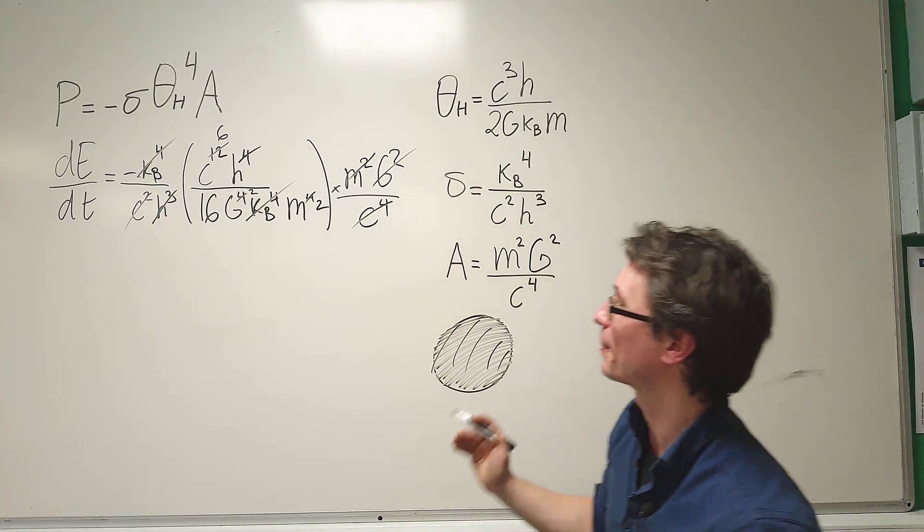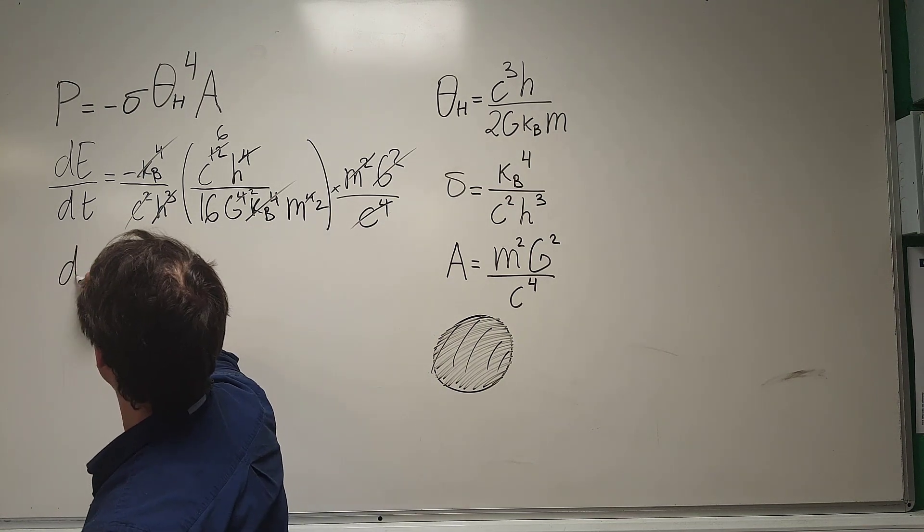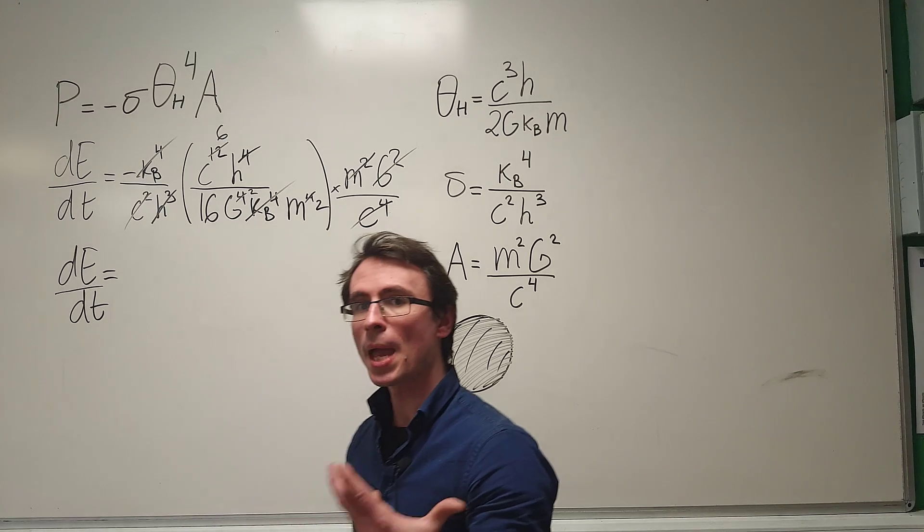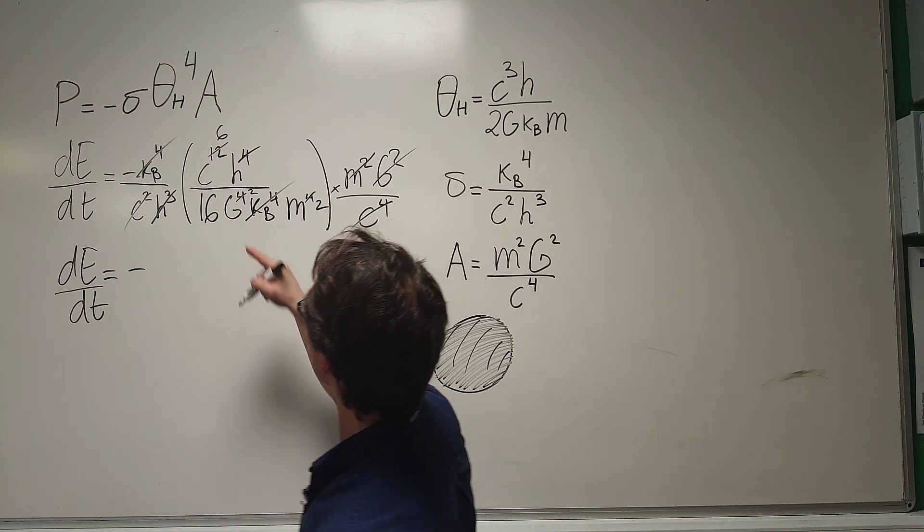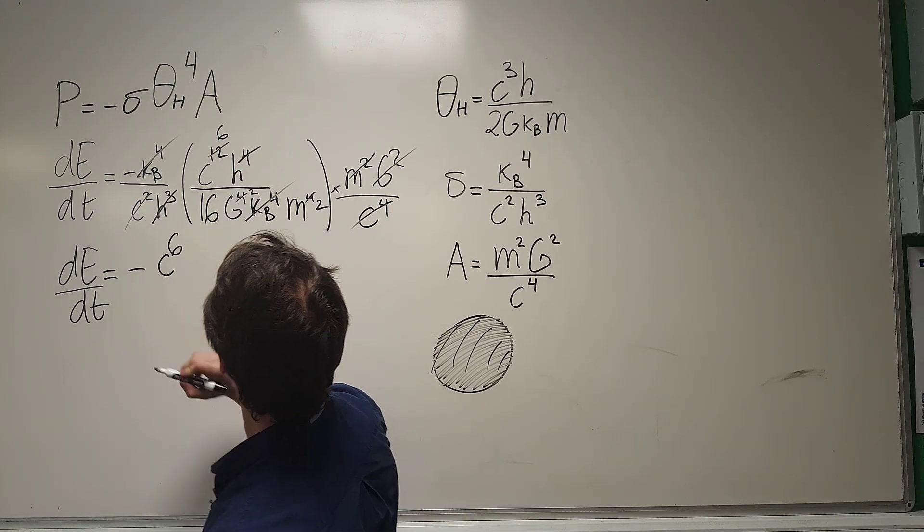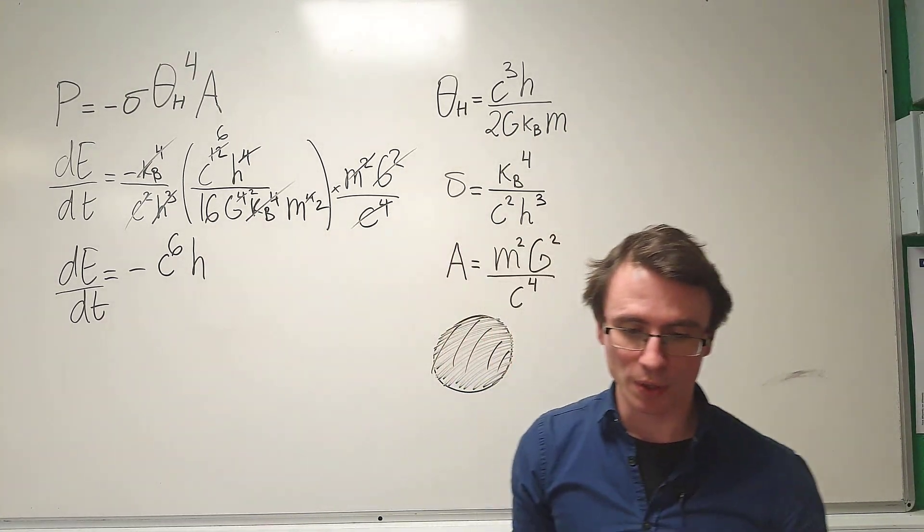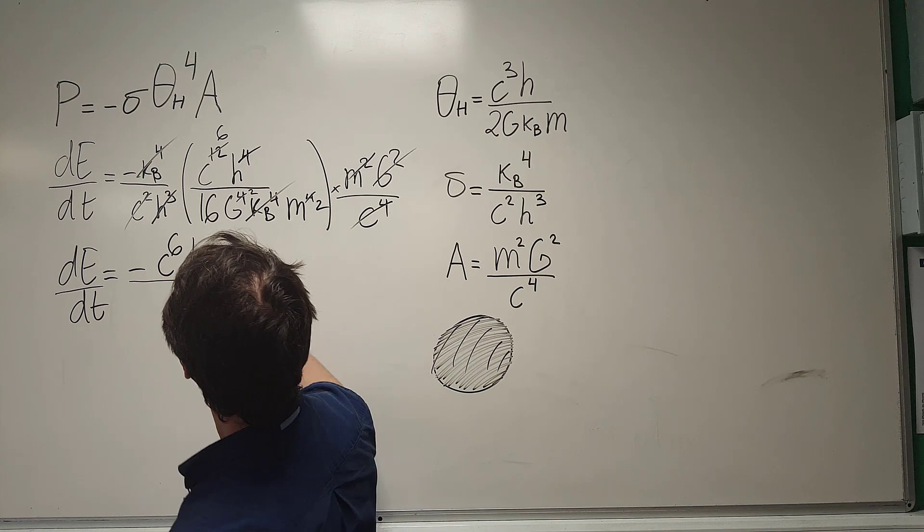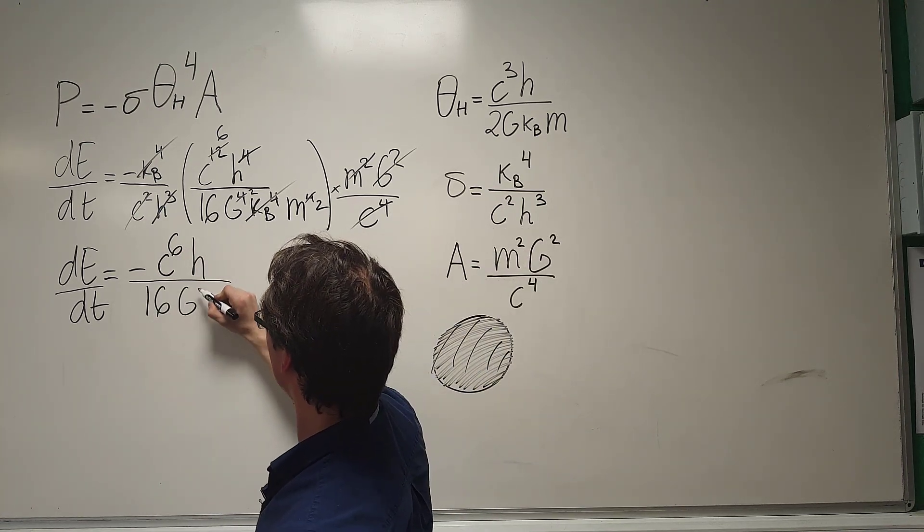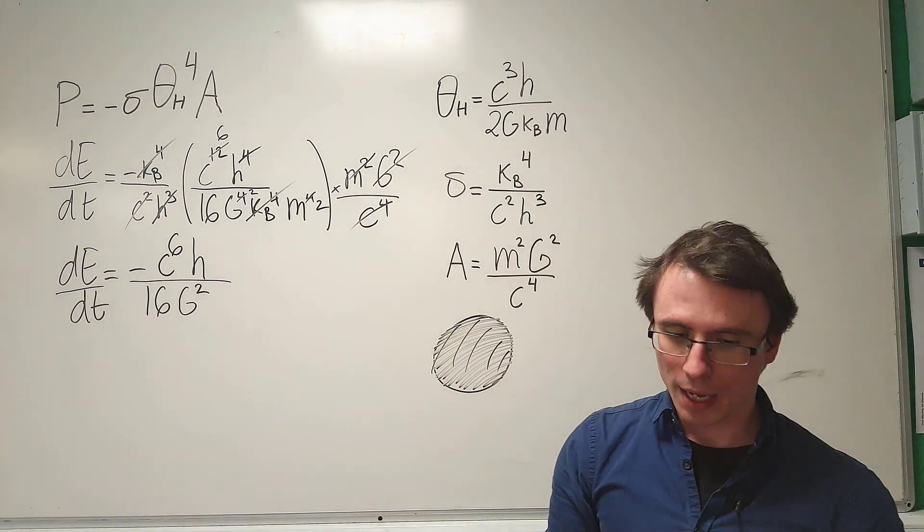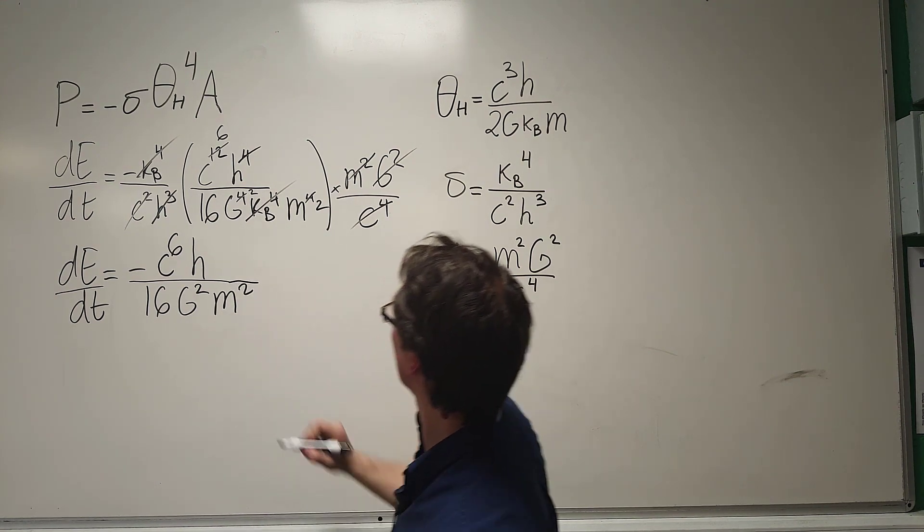Let's see whether we can just write down what's left from our expression. So, we have dE/dt. dE/dt is going to equal, let's not forget the minus sign. So, C, the speed of light, raised to the power of 6. Then, we have a factor of H. Now, just underneath here, we have a factor of 16. We're left with a factor of G squared. And what else do we have? We have a factor of M squared over here.